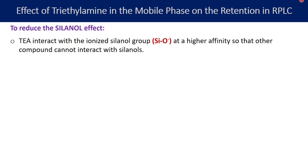There are almost 50% of the free silanol groups present on any given C8 or C18 stationary phase, unless it is an end-capped stationary phase. In the end-capping process, you are further binding the silanol groups so they get further reduced. But for a stationary phase which is not end-capped, you will have 50% free silanol groups. When these silanol groups stay in the ionized state — SiO⁻ — that is called the ionization state of the silanol groups. Triethylamine can interact with this ionized silanol group at higher affinity so that other compounds cannot interact with the silanols.